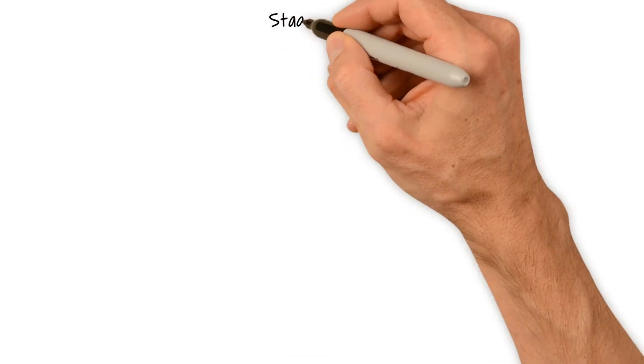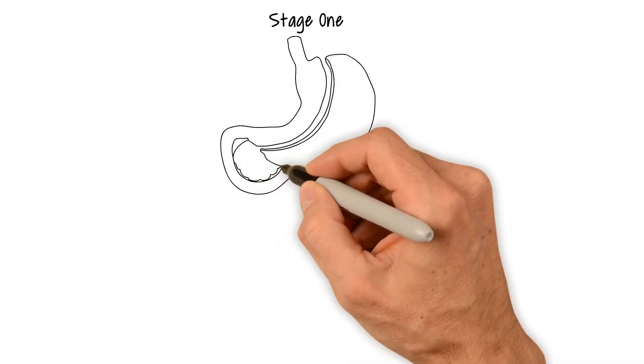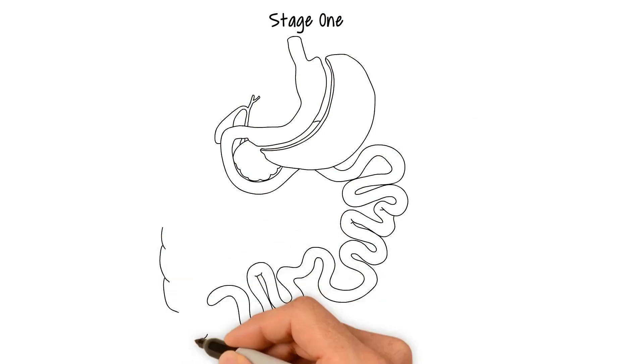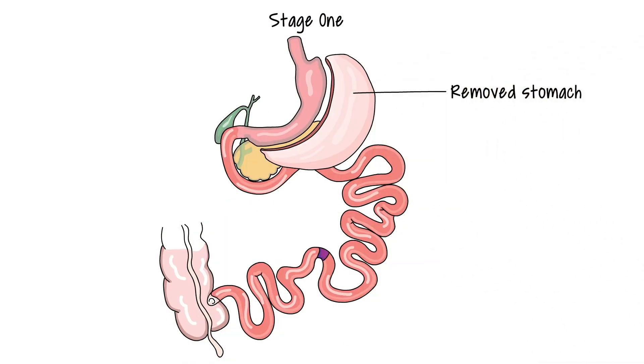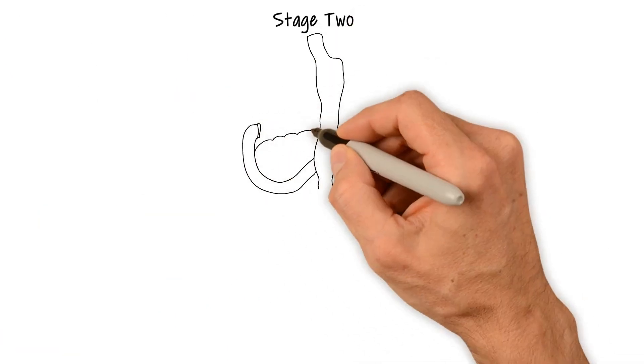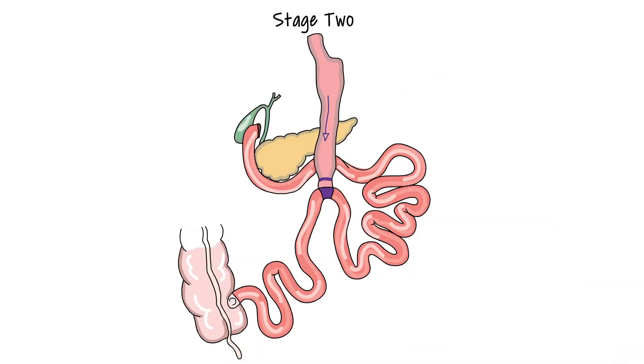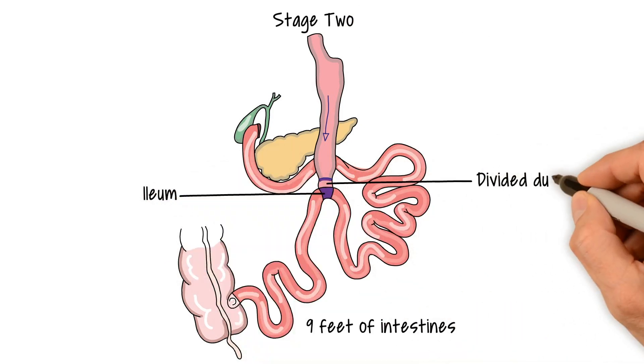The DS procedure, performed using minimally invasive techniques, begins with a sleeve gastrectomy, the most commonly performed bariatric surgery, which removes a portion of the stomach to reduce its size by about 75 to 85%. A 9-foot long downstream portion of the small intestine, called the ileum, is then brought up and connected to the short segment of the divided duodenum just beyond the stomach.